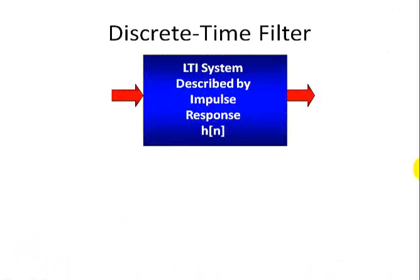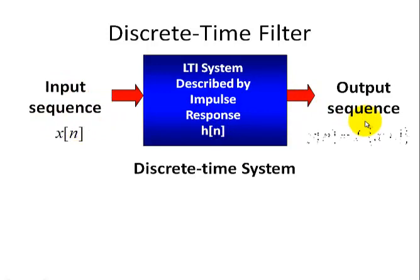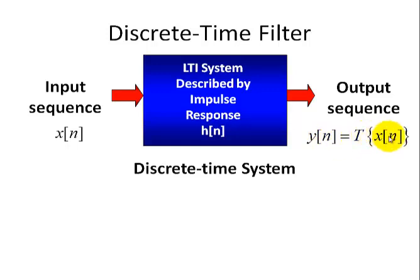Here we have a discrete time filter described by the impulse response, which we call h(n). We have an input sequence Xn and an output sequence Yn, where the output is derived from our input through some operation T.